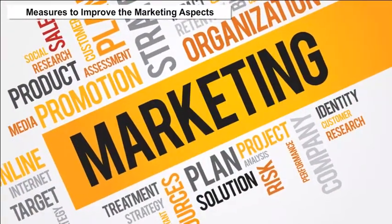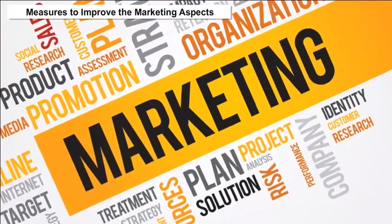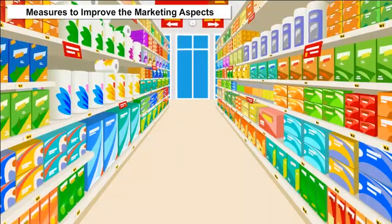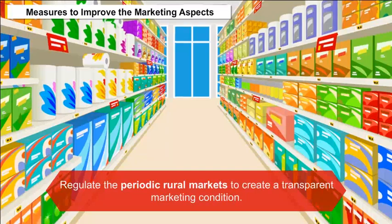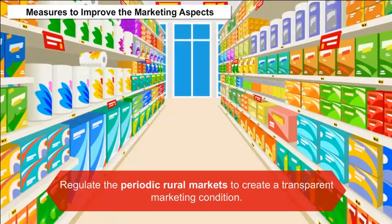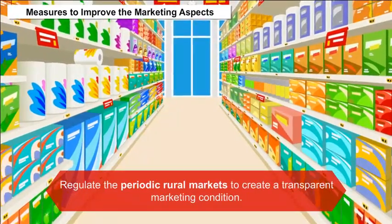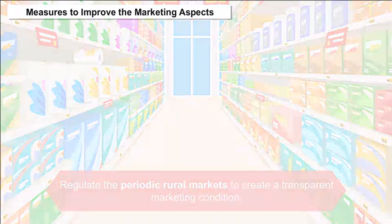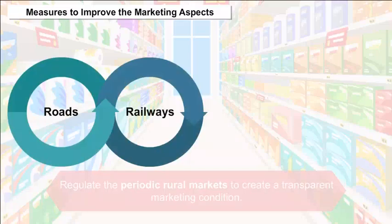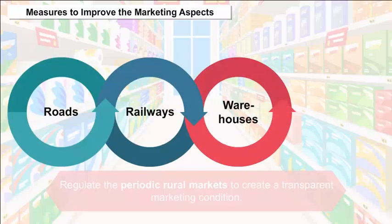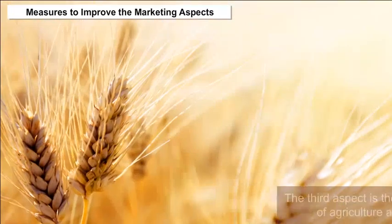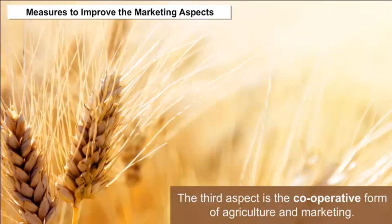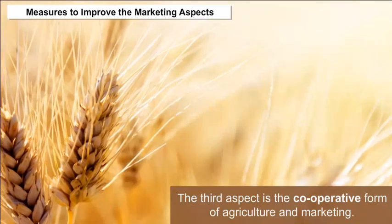Measures to improve the marketing aspects: The most primary step is to regulate periodic rural markets to create a transparent marketing condition. The second step is to create proper infrastructure like roads, railways, warehouses, and different food processing units. The third aspect is the cooperative form of agriculture and marketing.